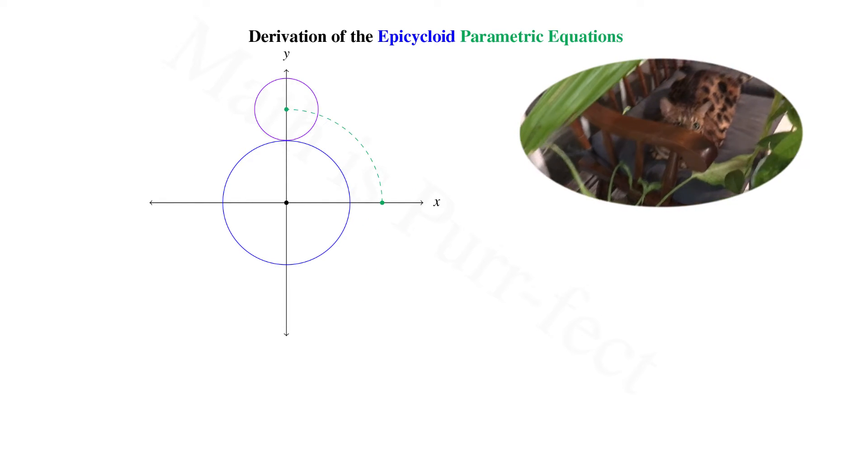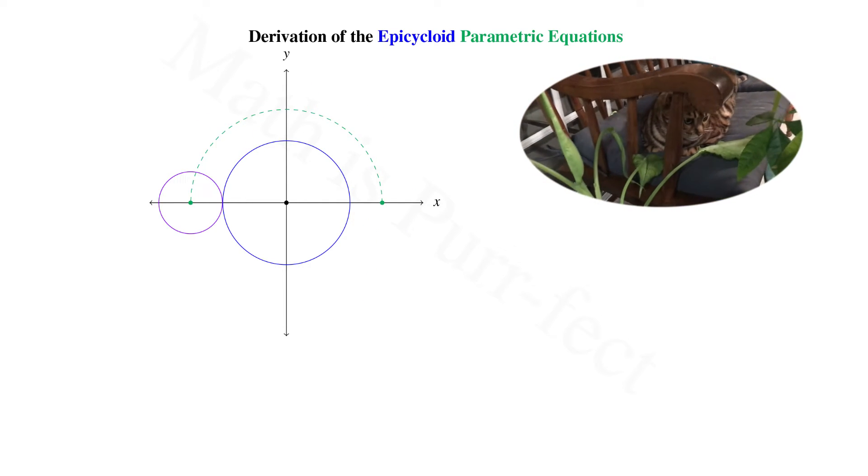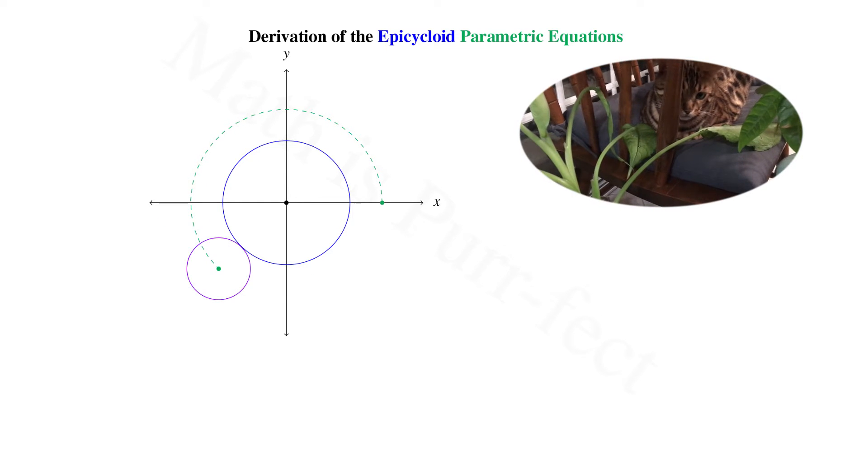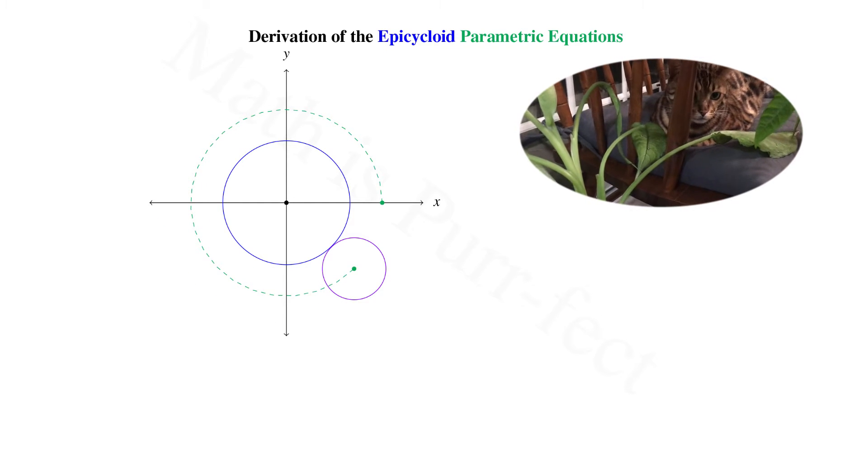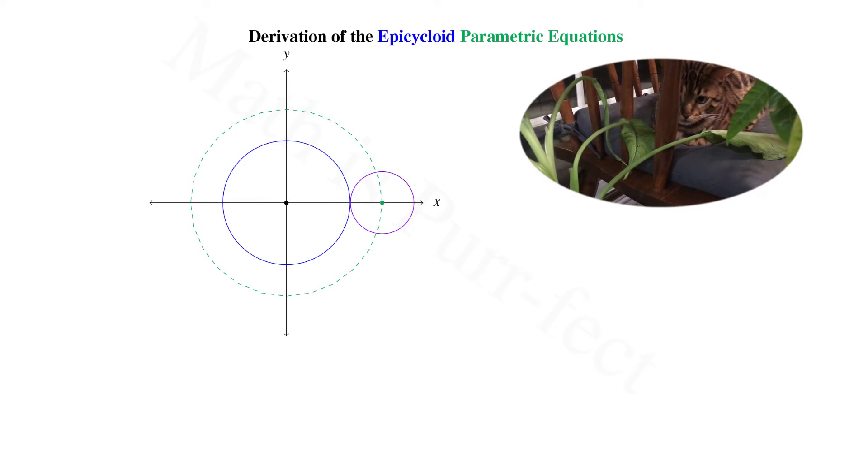I'd also like to note that as the outer circle rolls along the circumference of the one inside, its center remains a fixed distance from the origin, namely the sum of the two circles' radii.